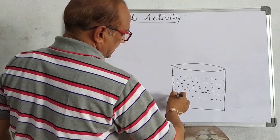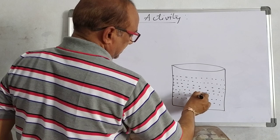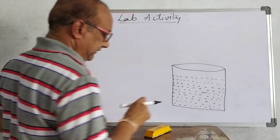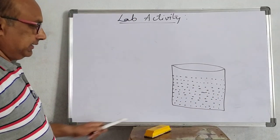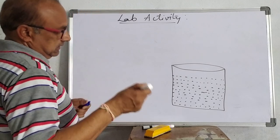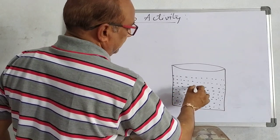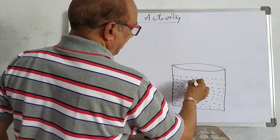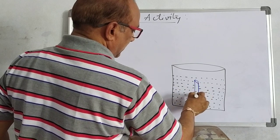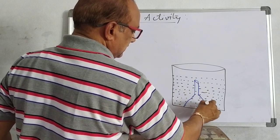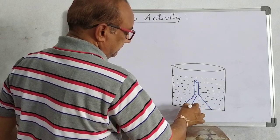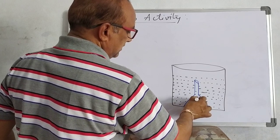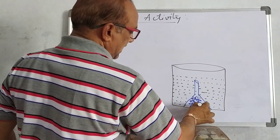This is the beaker containing water like this. And into this beaker containing water, here we are putting the inverted funnel with four to five Hydrilla plant twigs. These are the Hydrilla plant twigs in an inverted position glass funnel as shown in the figure.